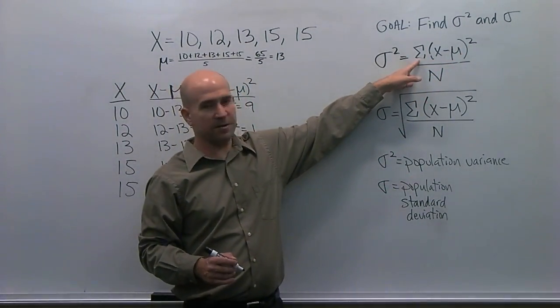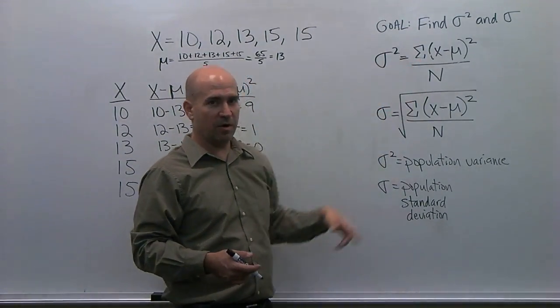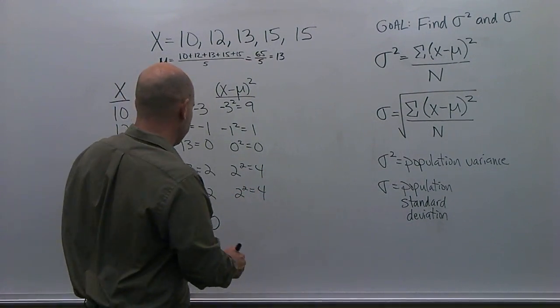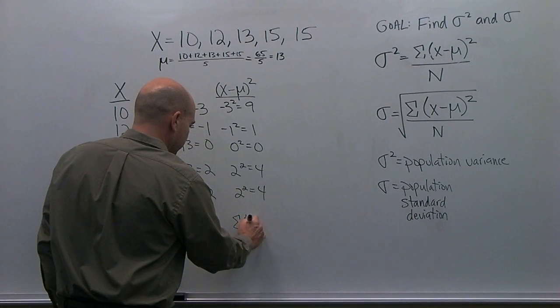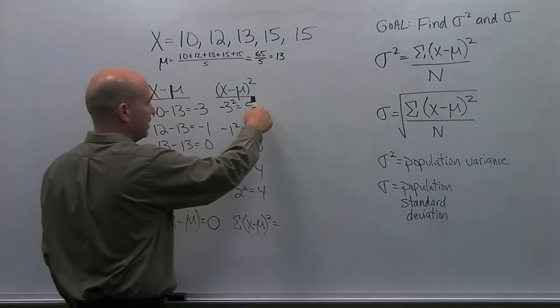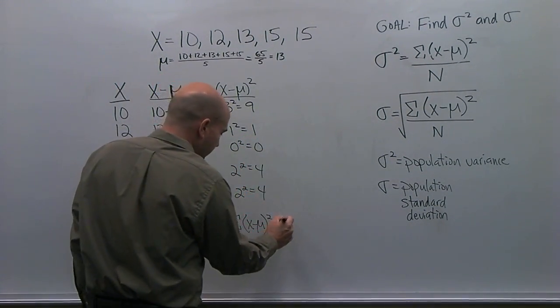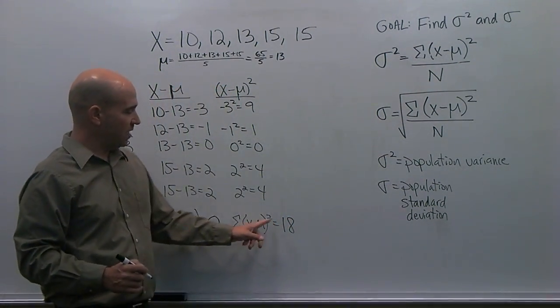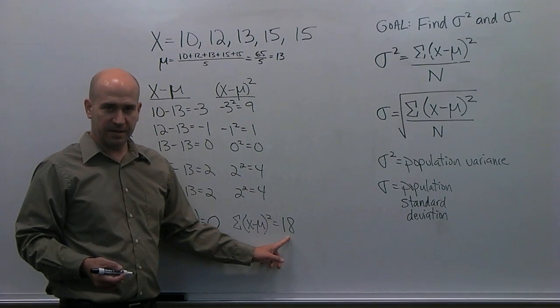So, all I have left with the numerator is to take the sum of those values, or in other words, to add them up. So, let's go ahead and do that. The sum of x minus μ squared equals, 9 plus 1 is 10, plus 0 is 10, plus 4 is 14, plus 4 is 18. So, we have the sum of the squared deviation scores is equal to 18.